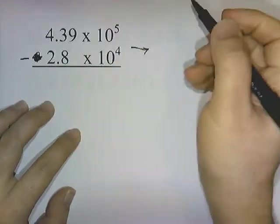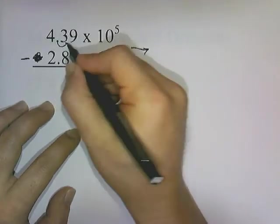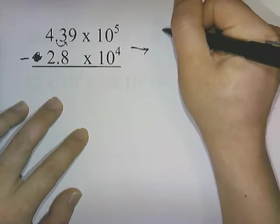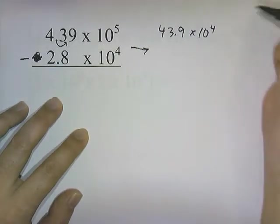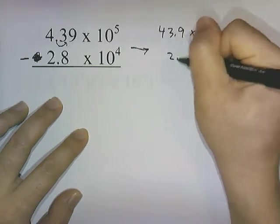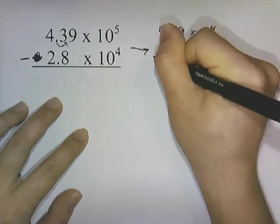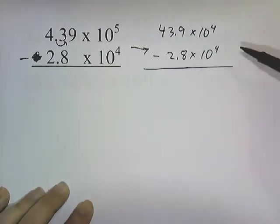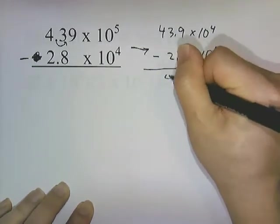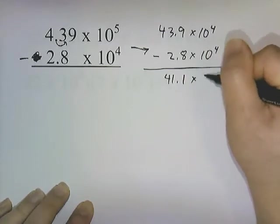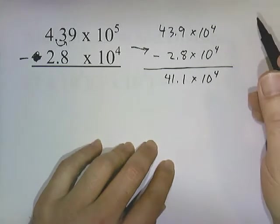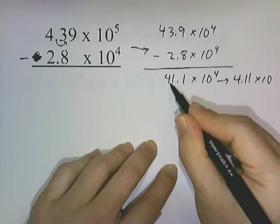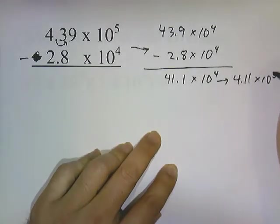I'm going to convert the top one. If I move this one over, that changes the exponent — I've moved it one place over this way, so we subtract 1 and make it 10 to the 5th. This now becomes 43.9 times 10 to the 4th, and this stays 2.8 times 10 to the 4th. Now they're at the same power, so 43.9 minus 2.8 gives me 41.1 times 10 to the 4th. In proper notation, that's 4.11 times 10 to the 5th.